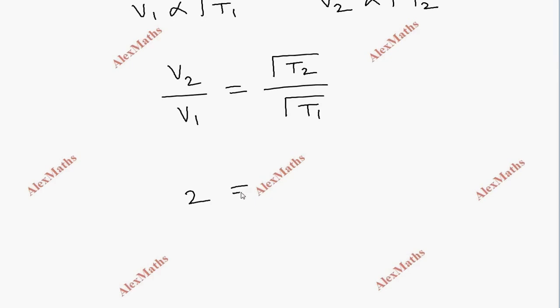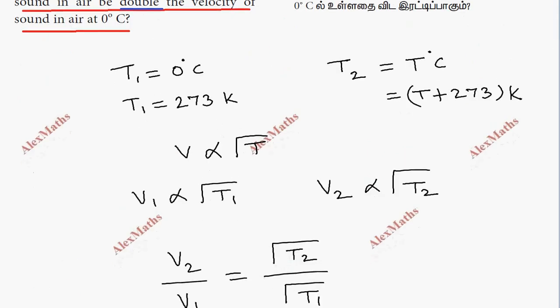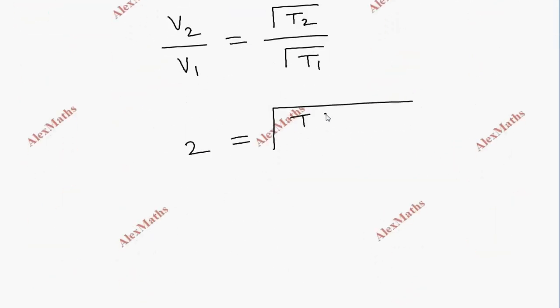So 2 equals the square root of T plus 273 divided by 273. Squaring both sides, 4 equals T plus 273 divided by 273.